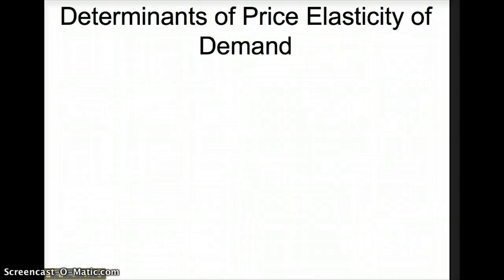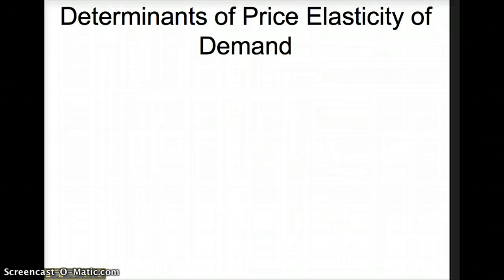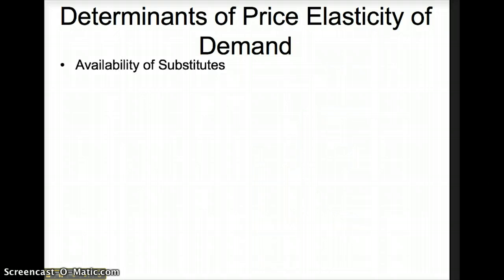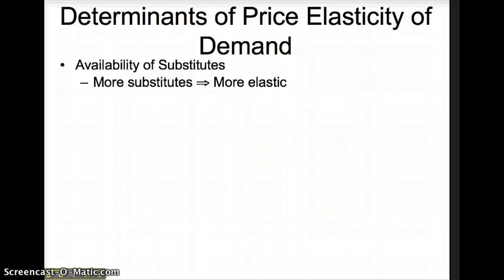Now that we know what elastic and inelastic demand means, what determines if a good is in fact elastic or inelastic? There are four determinants of price elasticity of demand. The first is the availability of substitutes. The more substitutes there are available for a good, it allows customers to be more responsive to price changes. Therefore, demand is more elastic.